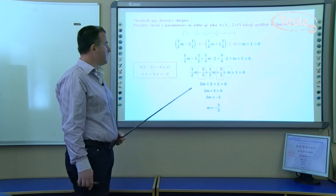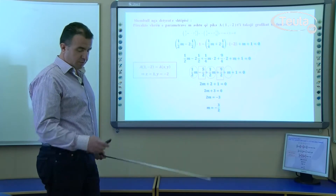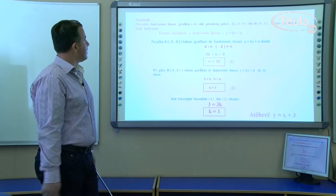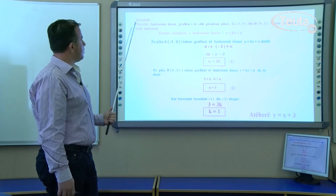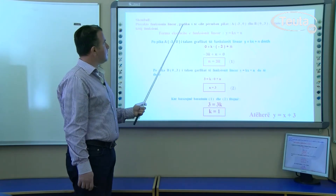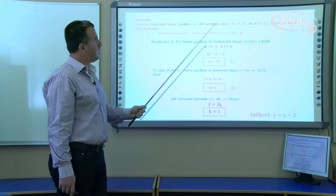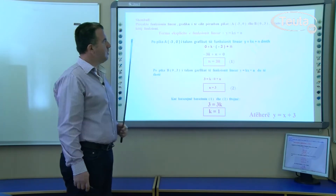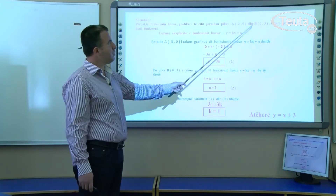Pra kështu mund të punohet detyra që keni pasur për të punuar në detyrë shtëpie. Në vazhdim kemi shembullin që thotë: të saktohet funksioni linear, grafiku i të cilit përmban pikat A me koordinata (-3, 0) dhe B me koordinata (0, 3).